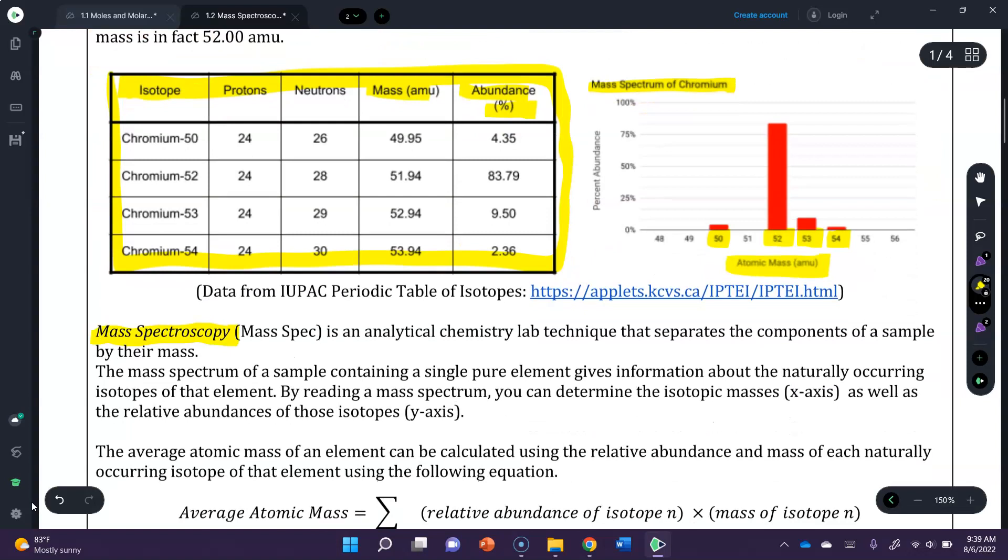So continuing on, mass spectroscopy or mass spec for short is an analytical chemistry lab technique that separates components of a sample by their mass. If you watch NCIS, yes, Abby loves major mass spec, which is her mass spectroscopy machine. It works in real life a little different than that, but shout out to Abby's major mass spec here. The mass spectrum of a sample containing a single pure element gives information about the naturally occurring isotopes of that element.